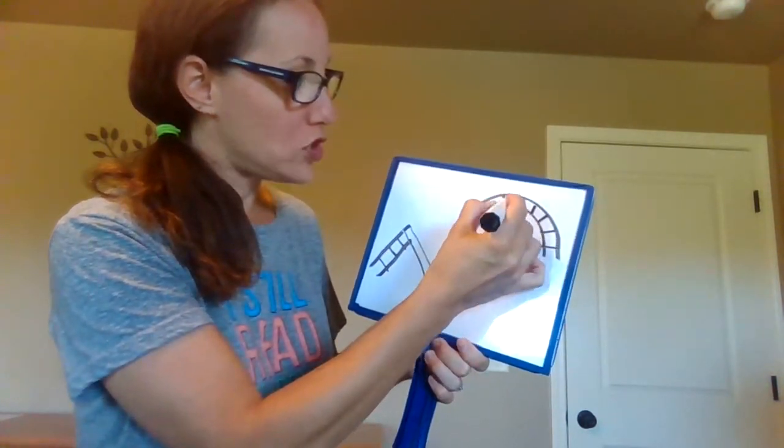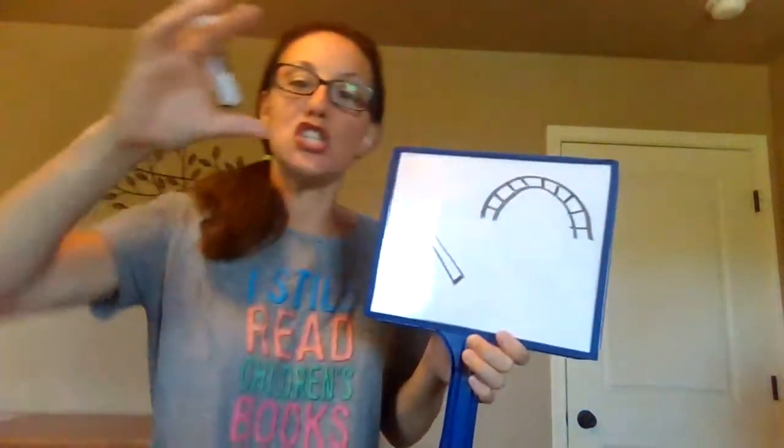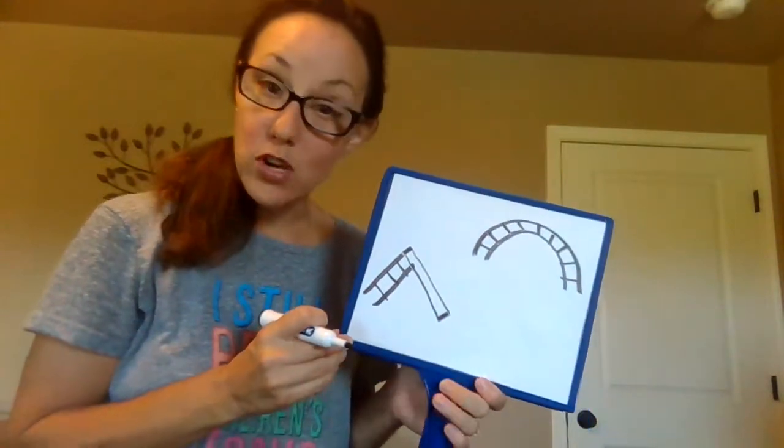It's kind of a round shape. Those are the monkey bars you could go across. So I think of a shape to help me draw something tricky.